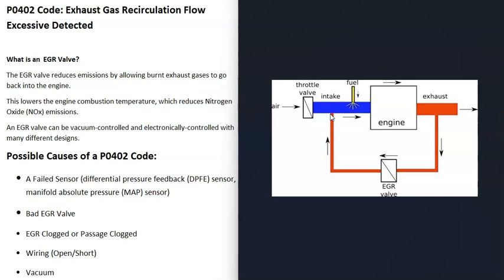Lowering combustion temperature reduces nitrogen oxide, which is an emissions benefit. When you get a P0402 code, the computer is seeing that there's some kind of issue — mainly that the flow coming from the exhaust going into the intake is excessive, meaning too much is going into the intake for some reason, so it's going to require troubleshooting.